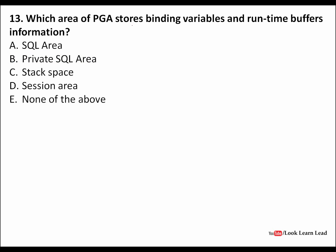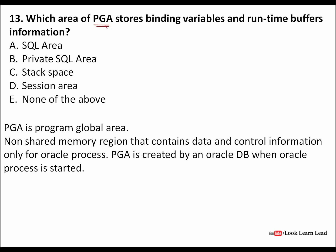Which area of PGA stores binding variable and runtime buffer information? PGA stands for Program Global Area. It is a non-shared memory region. It contains data and control information only for the Oracle process — it is created when an Oracle process starts. Because it is specific to the Oracle process, it is stored in the private SQL area. The answer is B.